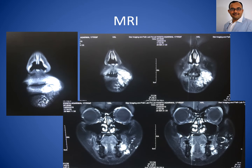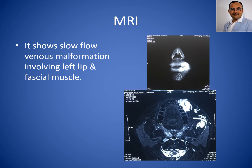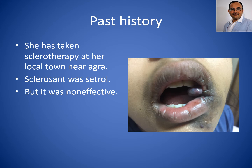MRI confirmed the findings with high intensity signals on T2-weighted images. Along with the cheek region, some portion of the lip is also involved. In past history, she had already undergone one session of sclerotherapy with cetrol two years back, but it was not effective.